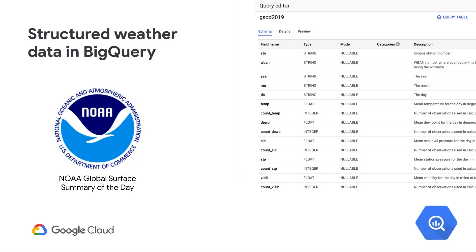Our BigQuery public datasets can be joined with your existing data to help you uncover new insights more easily. Datasets like the Global Surface Summary of the Day, which provides meteorological observations at weather stations around the world every day going back more than 100 years, can, for instance, help you better understand how weather might impact sales patterns for your business.